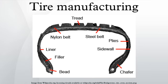Manufacturing process: Tire plants are traditionally divided into five departments that perform special operations. These usually act as independent factories within a factory. Large tire makers may set up independent factories on a single site, or cluster the factories locally across a region.